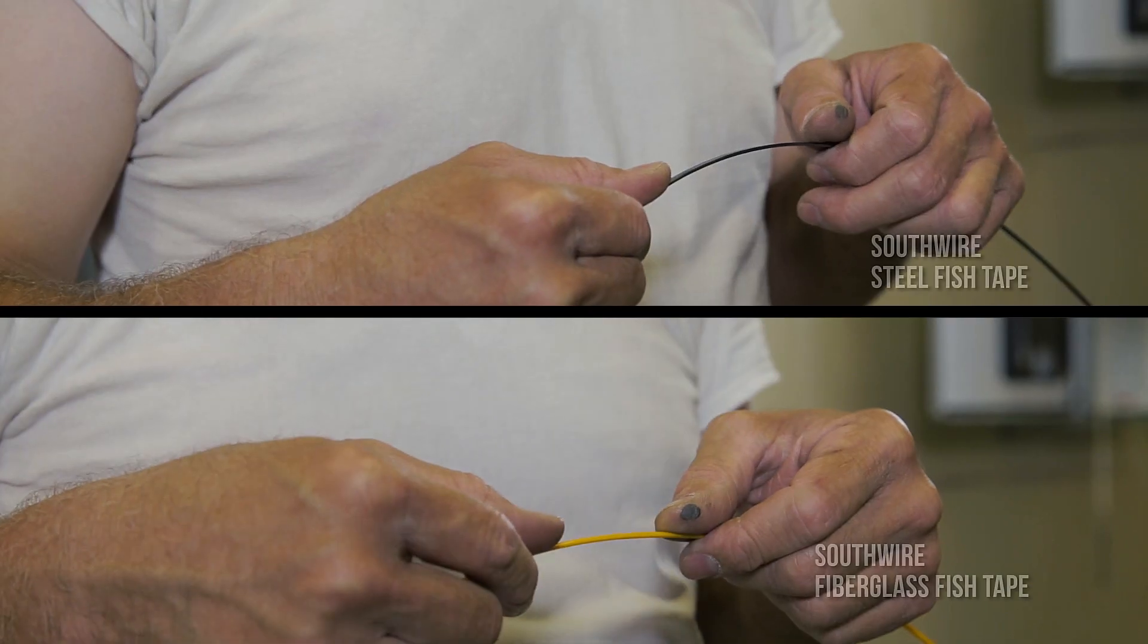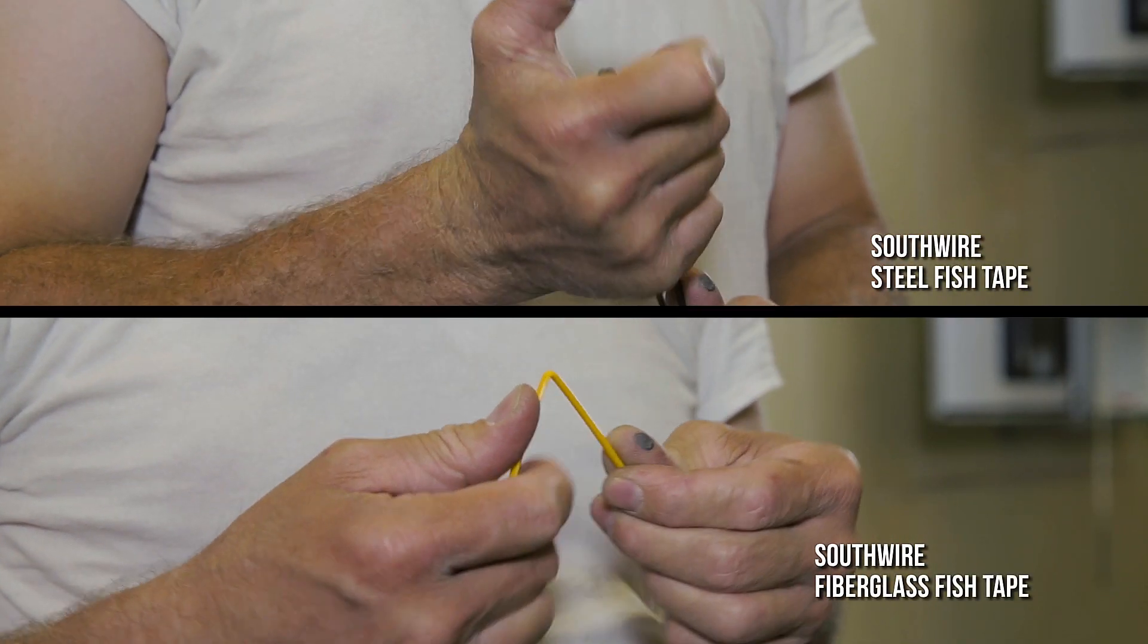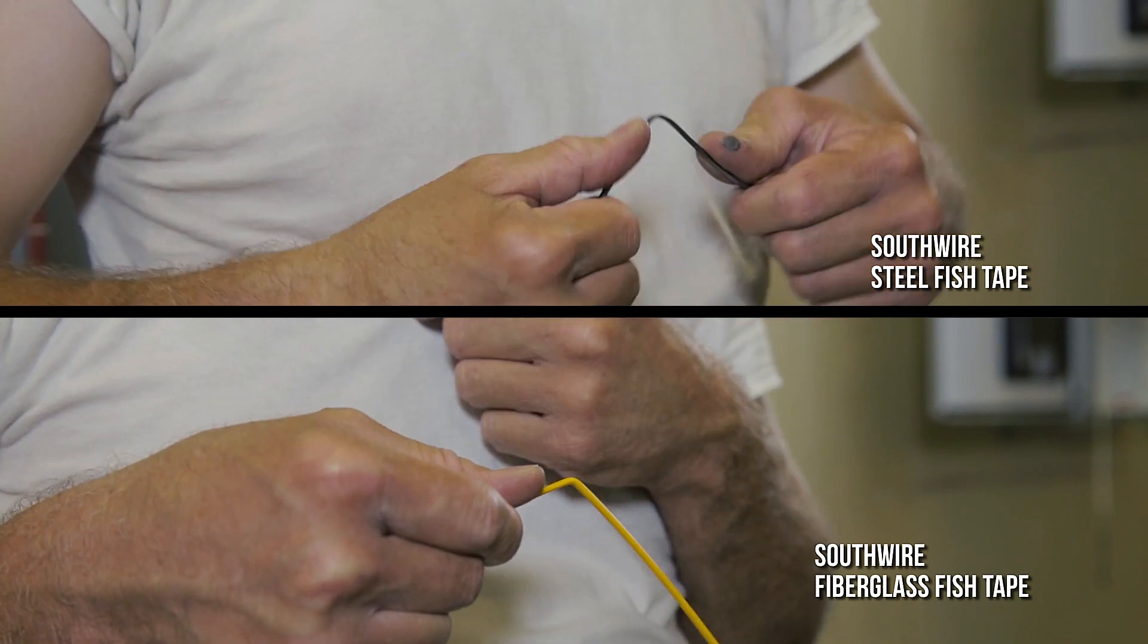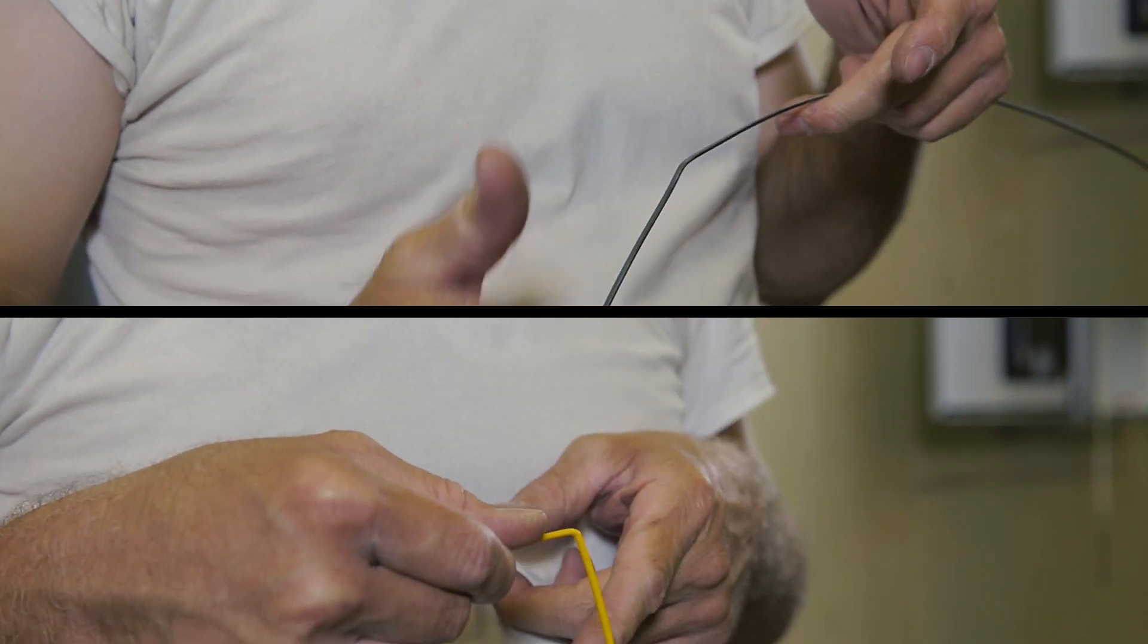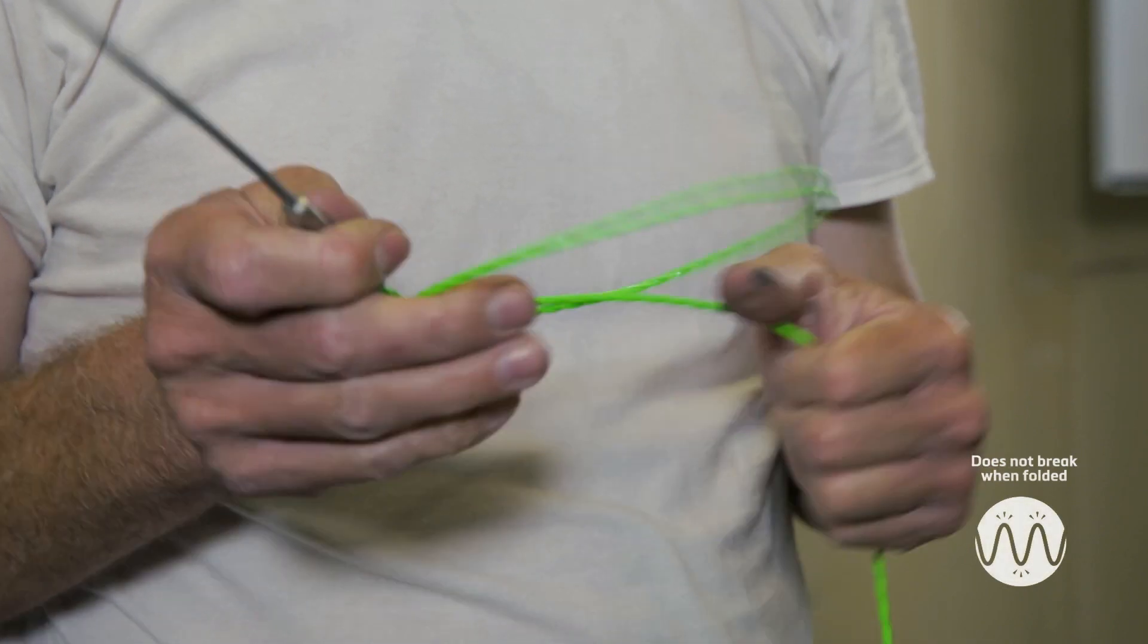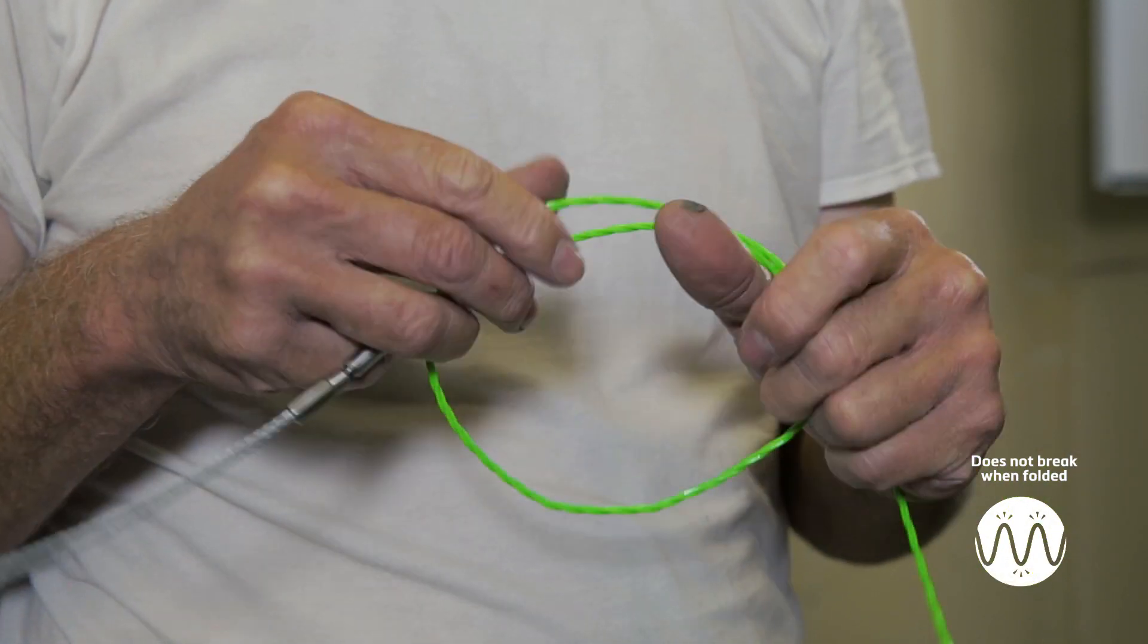The Simple Fish Tapes are kink and break resistant, combining the strength of a steel fish tape with greater flexibility than fiberglass fish tapes. The non-conductive material is also rust resistant and will not deform when bent.